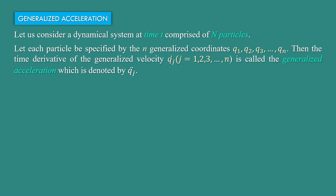Then the time derivative of the generalized velocity qj dot, where j goes from 1, 2, 3 up to n, is called the generalized acceleration, which is denoted by qj double dot.